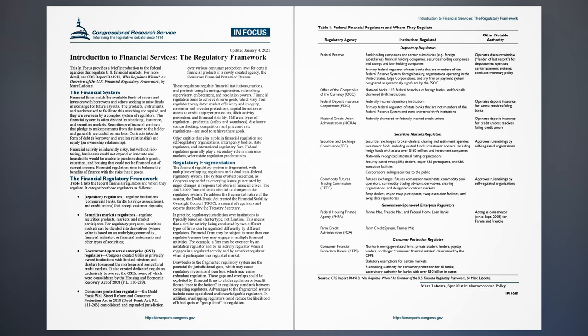Table 1: Federal Financial Regulators and Whom They Regulate. Depository Regulators — Federal Reserve: regulates bank holding companies and certain subsidiaries (e.g., foreign subsidiaries), financial holding companies, securities holding companies, and savings and loan holding companies. It is the primary federal regulator of state banks that are members of the Federal Reserve System, foreign banking organizations operating in the United States, Edge corporations, and any firm or payment system designated as systemically significant by the FSOC.